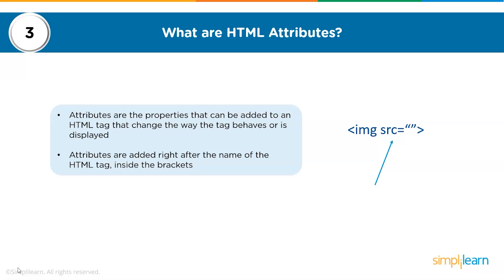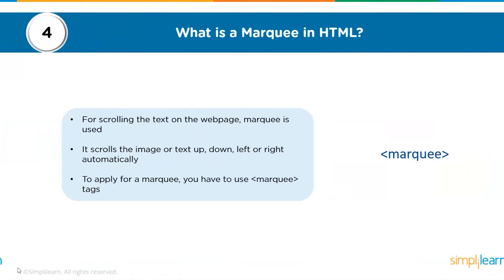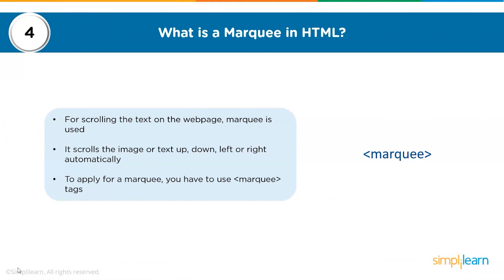The fourth question: what is Marquee in HTML? Marquee is used for scrolling text on a web page. It scrolls the image or text up, down, left, or right automatically. To apply a Marquee, you have to use Marquee tags.